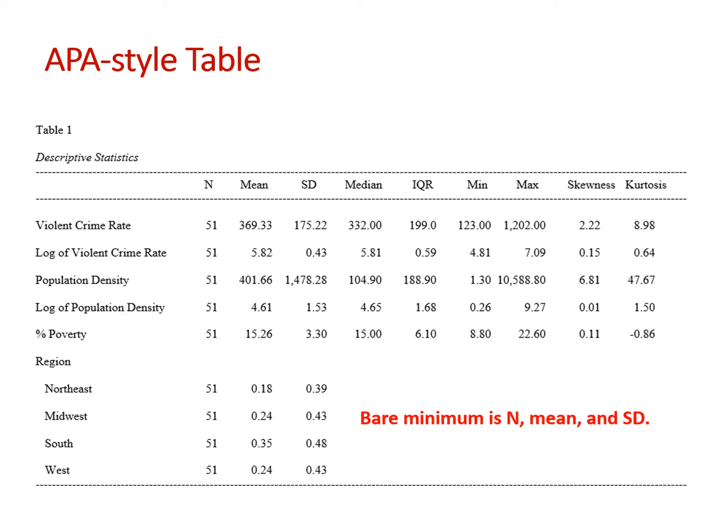We don't always need all the statistics shown here. At a bare minimum, we would expect to see the number of observations, the mean, and the standard deviation in our table of descriptive statistics. These are the core numbers used in many higher-level statistics. Individuals want to look at them: one, to make sure the population in your sample looks like the population at large, and two, to make sure there's nothing unusual happening in the data itself.